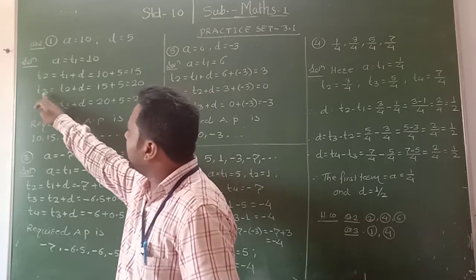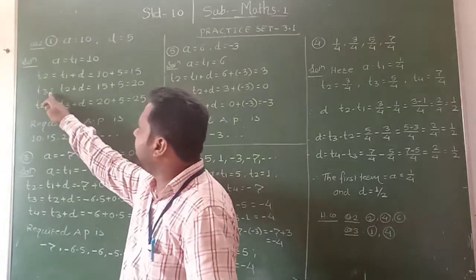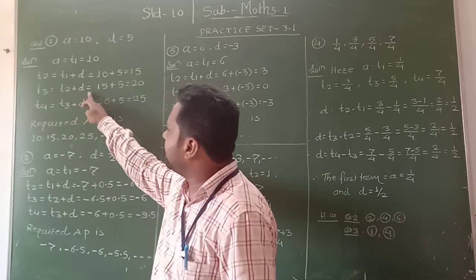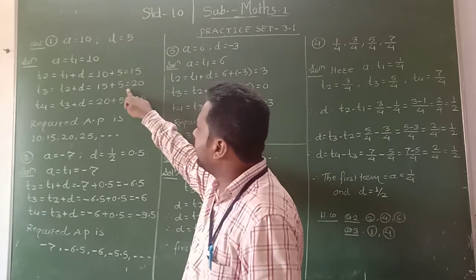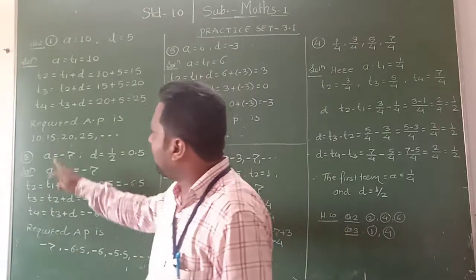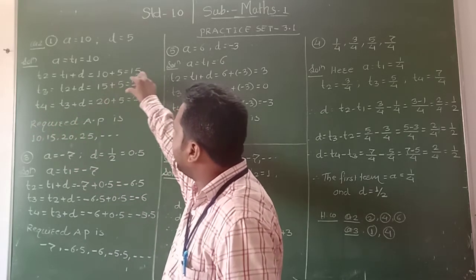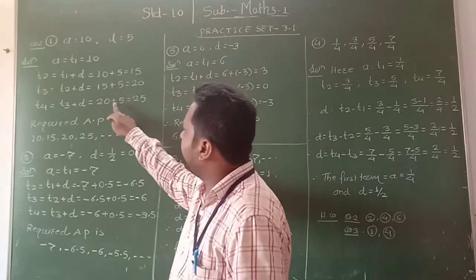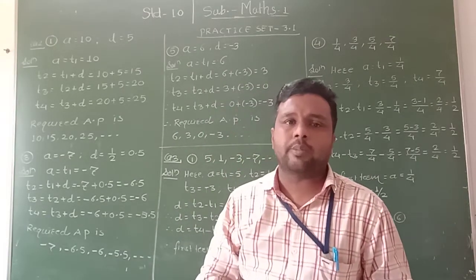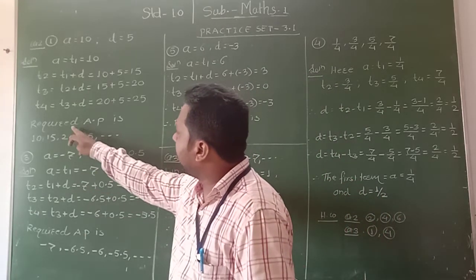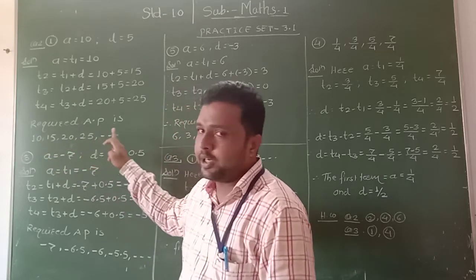Similarly, we find the third term. T3 is equal to T2 plus D, which is 15 plus 5, equal to 20. Then the fourth term T4 is equal to T3 plus D, which is 20 plus 5, equal to 25. Therefore, the required arithmetic progression is 10, 15, 20, 25, and so on.